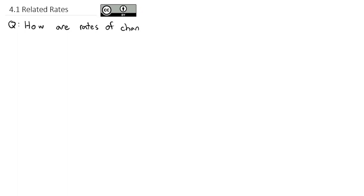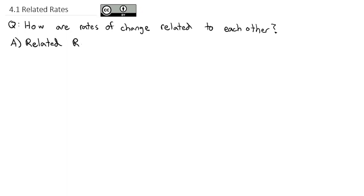Chapter four is going to take a look at how we can use the derivative in various contexts and applications. The first one is what are called related rates. Our question is: how are rates of change — that's a derivative — related to each other? A related rate means two things are changing in relationship to one another. One increases at a certain rate, and it makes the other one increase or decrease at a certain rate.